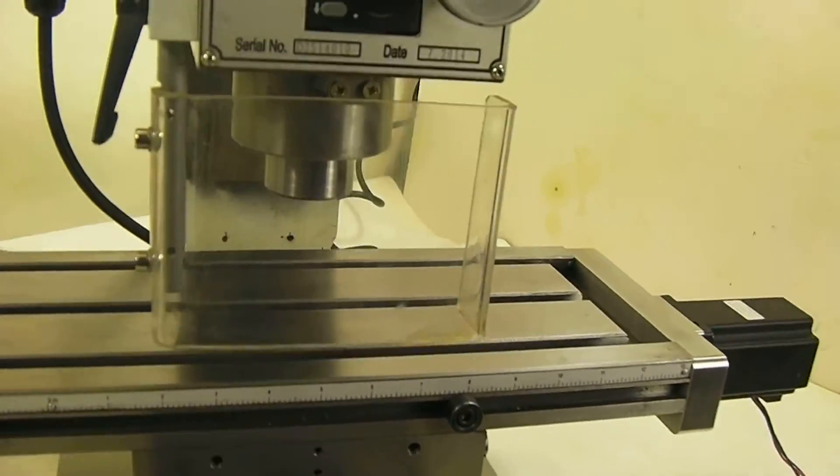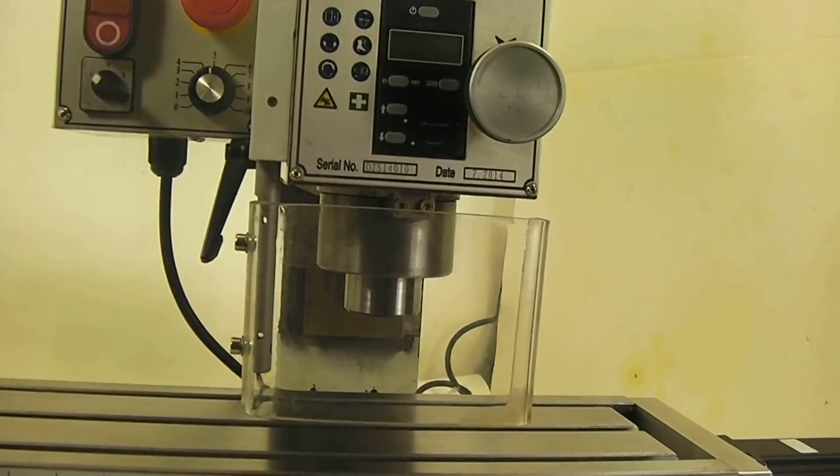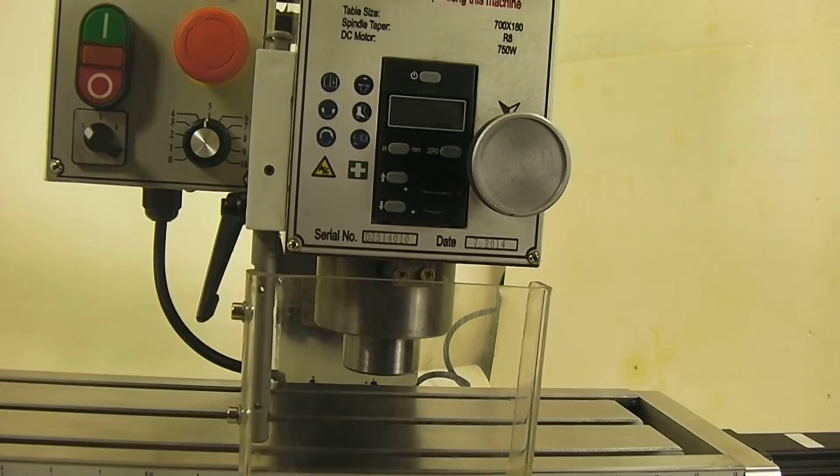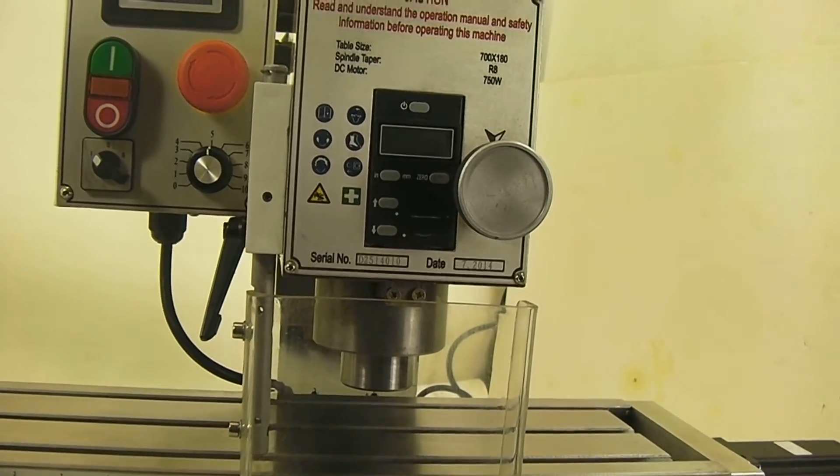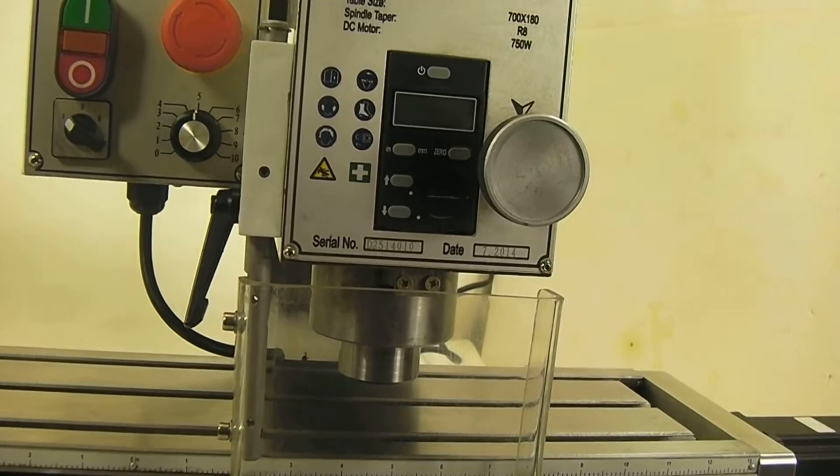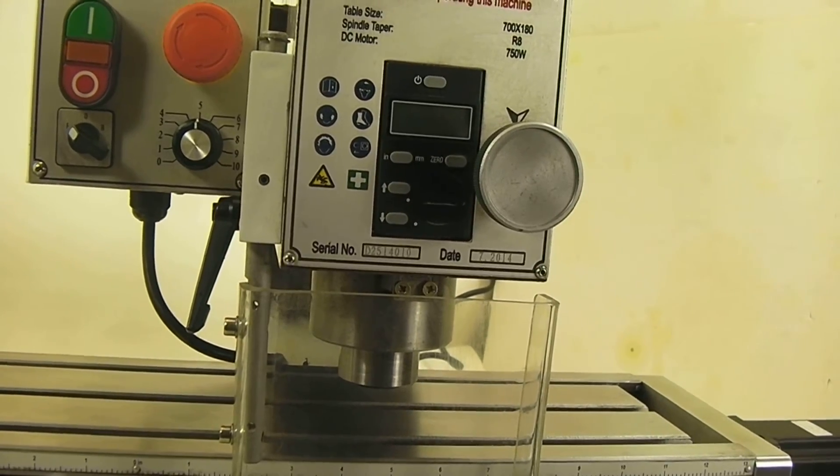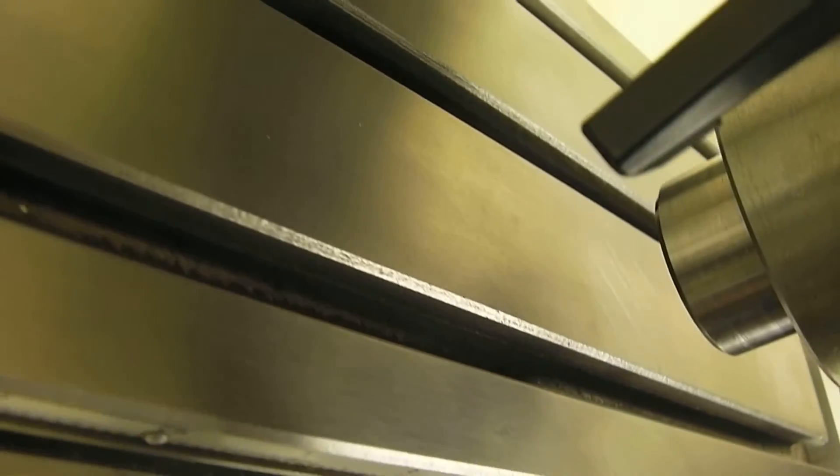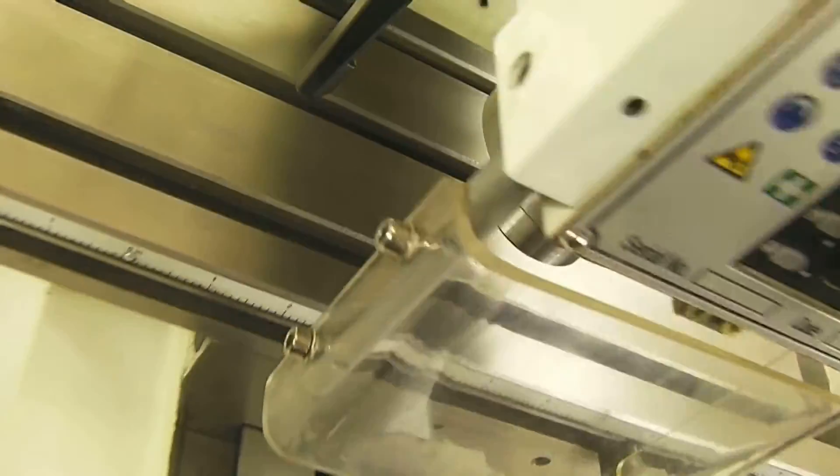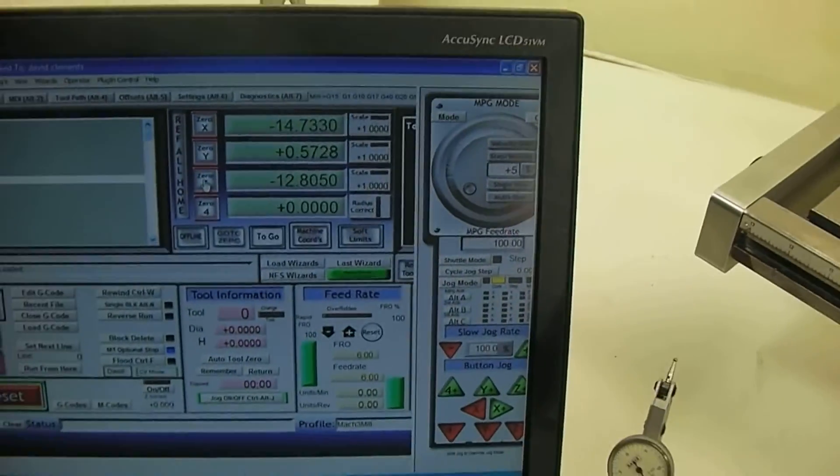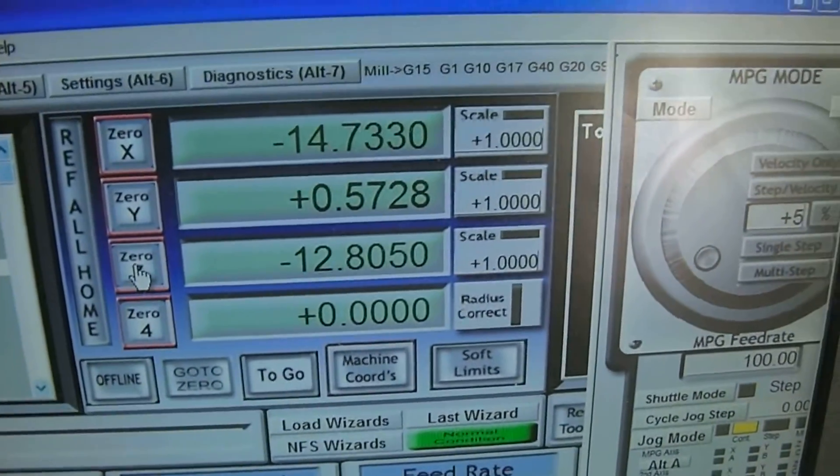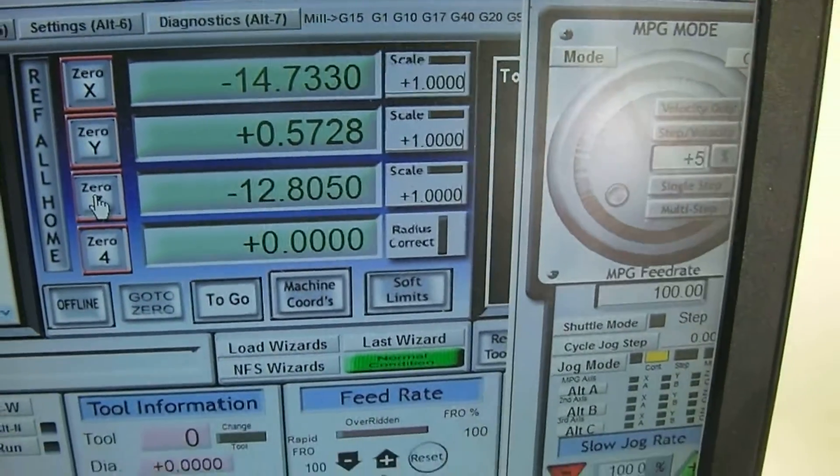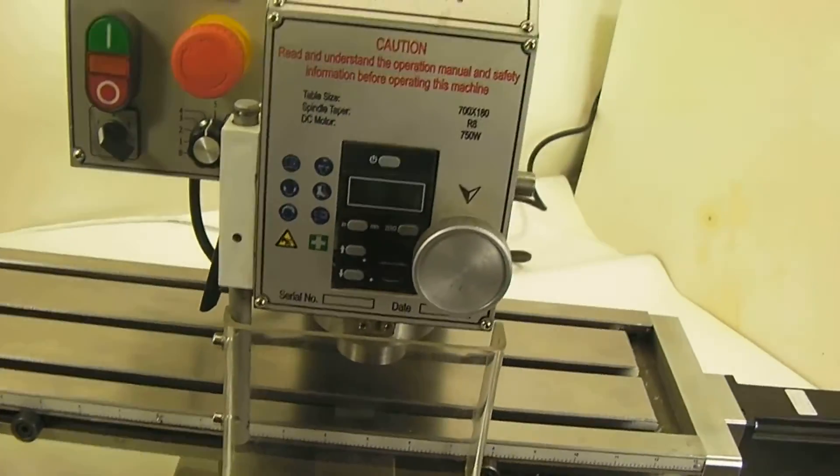So we're going to go down until we bottom to see where the maximum travel is. It doesn't hit the table, it gets close though. There you go, that's it. So you have about inch and a half, and that's with the quill up, so you can use any tool to get to the table. If you're working off of jig plates, Z travel is 12.8, so that's how much you get.